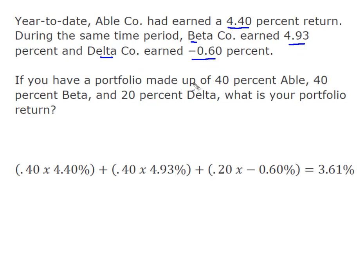My portfolio is forty percent Able, forty percent Beta, and twenty percent Delta. So that's a hundred percent of my portfolio.